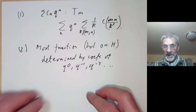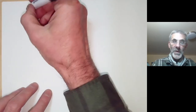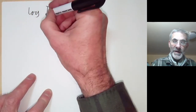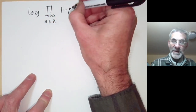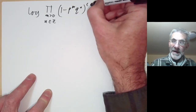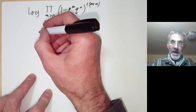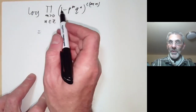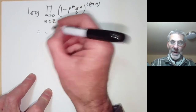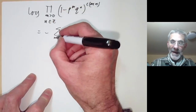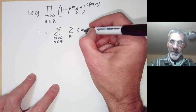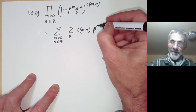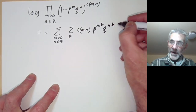Using these two facts we can prove the product formula. First we take the logarithm of the infinite product ∏_{m>0, n} (1 - p^m q^n)^{c(mn)}. Using the expansion of log(1 - x) from calculus, this turns out to be: the sum over m > 0 and n ∈ ℤ, and over k, of c(mn) · p^{mk} q^{nk} / k.